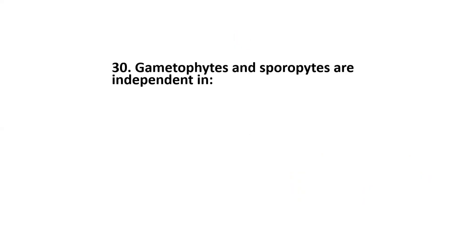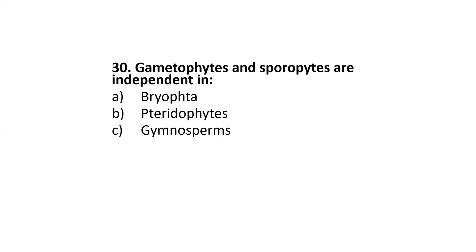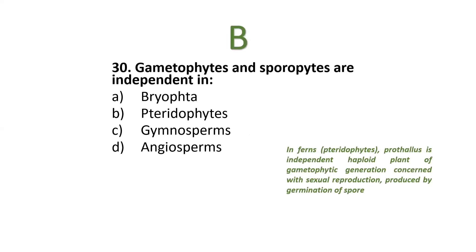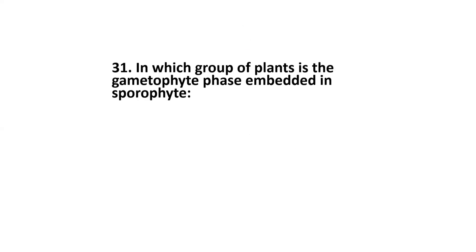Next: gametophytes and sporophytes are independent in — bryophyta, pteridophytes, gymnosperms, or angiosperms? The correct option is pteridophytes. In ferns, the prothallus is an independent haploid plant of the gametophytic generation concerned with sexual reproduction, produced by germination of a spore.